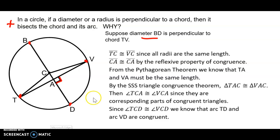We want to show that BD, or CD for that matter, the radius CD bisects chord TV. So we got to show that TA is congruent to VA and we got to show that arc TD is congruent to arc VD.